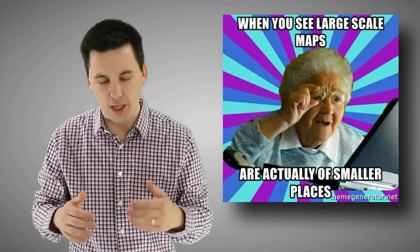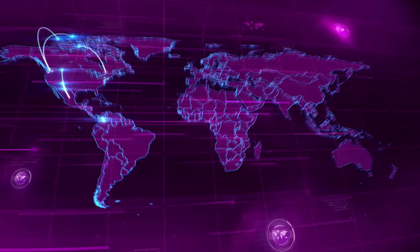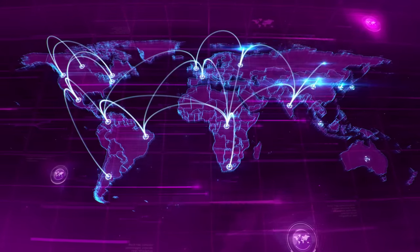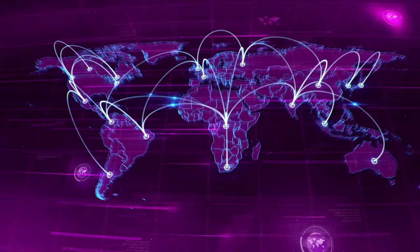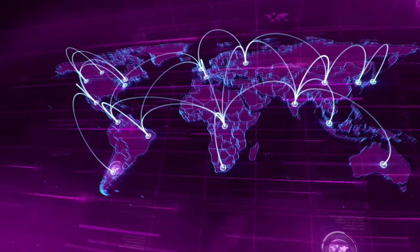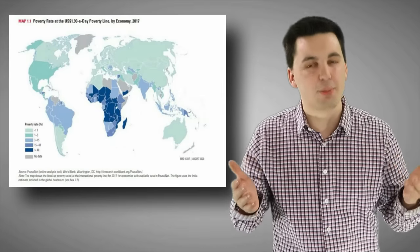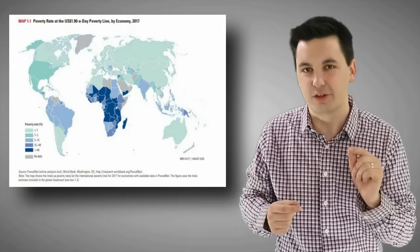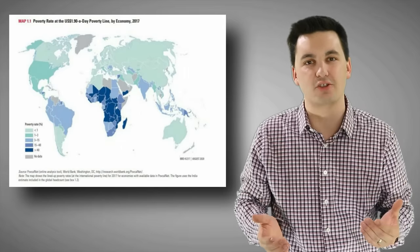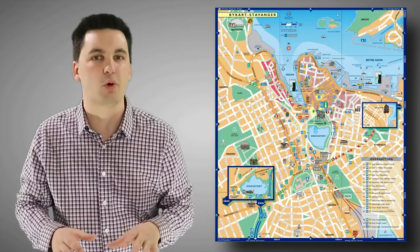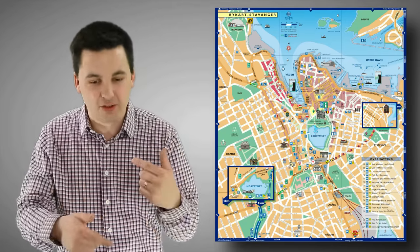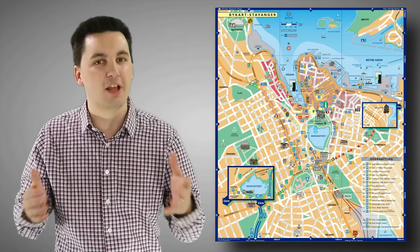Scale of analysis is looking at how data is organized — how it's being chunked together. Is it organized on a national scale of analysis based around country boundaries, or is it looking at a more local level like counties? Scale is just looking at how much of the Earth's surface we're viewing. A small-scale map would be like a map of the world — we're seeing a lot of the Earth's surface but have very little detail. A large-scale map would be like a county map, where we see a lot of detail but less of the Earth's surface.